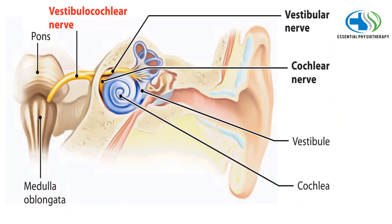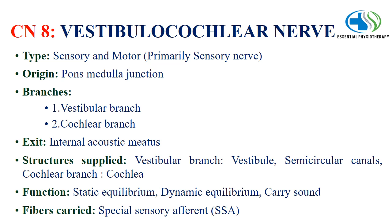The 8th cranial nerve is the vestibulocochlear nerve. It is primarily a sensory nerve with its origin from the pons-medulla junction. It is divided into two branches: the vestibular branch and cochlear branch, and exits through the internal acoustic meatus. The vestibular branch supplies the vestibule and semicircular canals, while the cochlear branch supplies the cochlea. Function is to maintain static and dynamic equilibrium and carry sound. Fibers carried are special sensory afferent fibers.